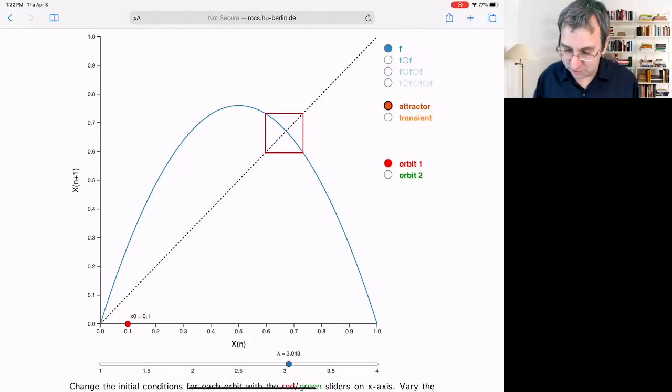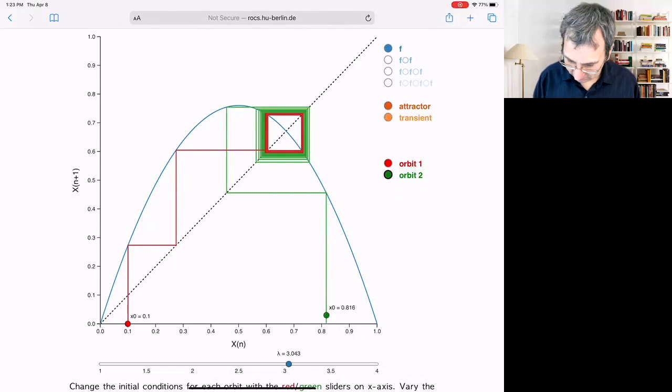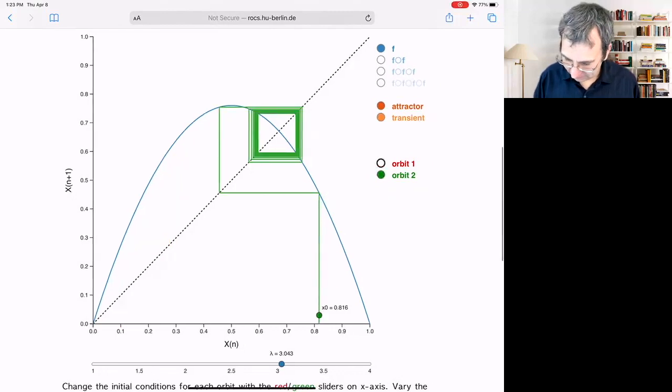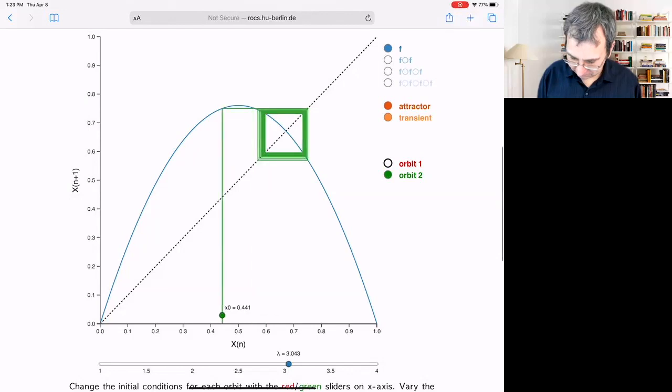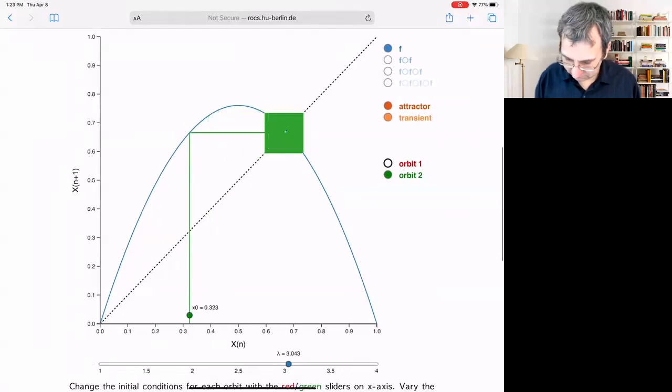And so this is jumping between two points. Jumping between two points is going to appear as a square in the cobweb diagram. It shows the transient. Maybe it's easier if we show it in green. And wherever I start, I will end up there. It either spirals out to it or it spirals into it. Of course, because it's a map, it's kind of weird to try to interpret.